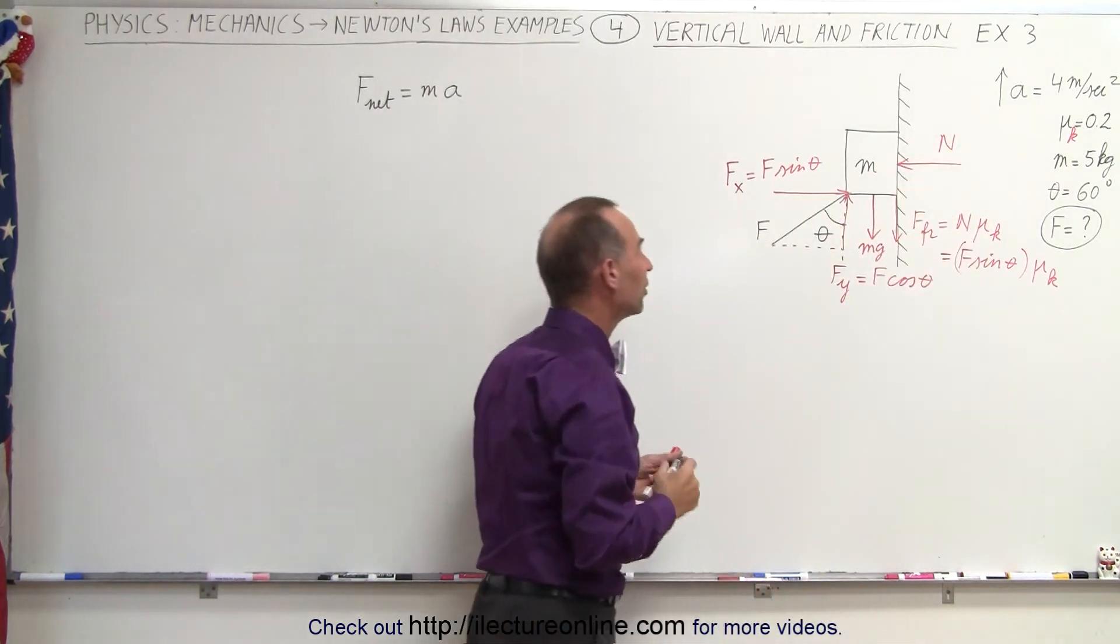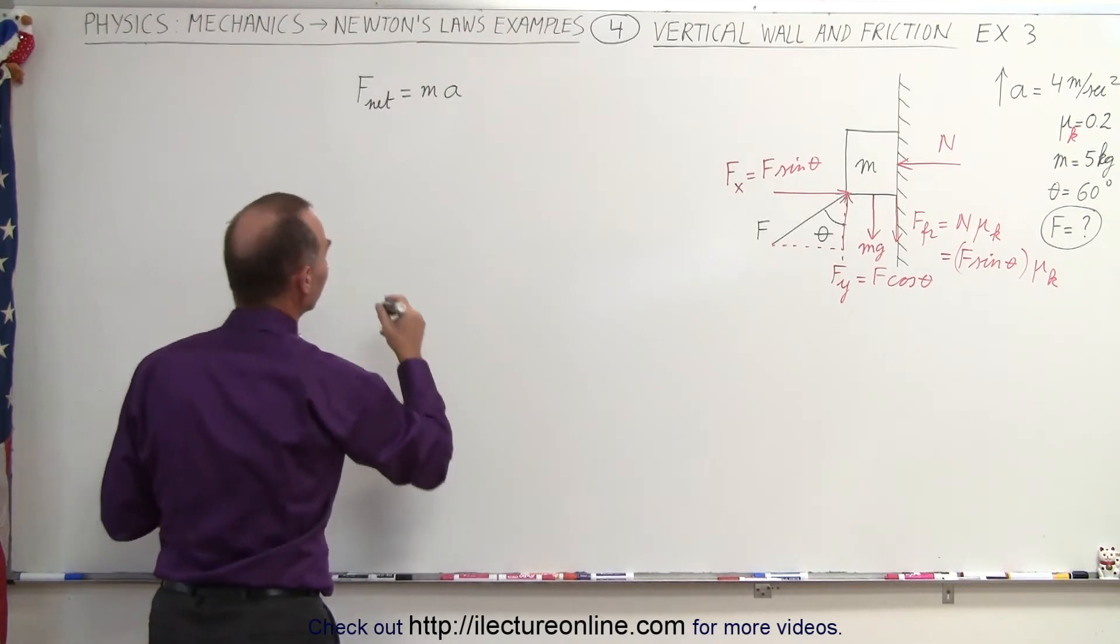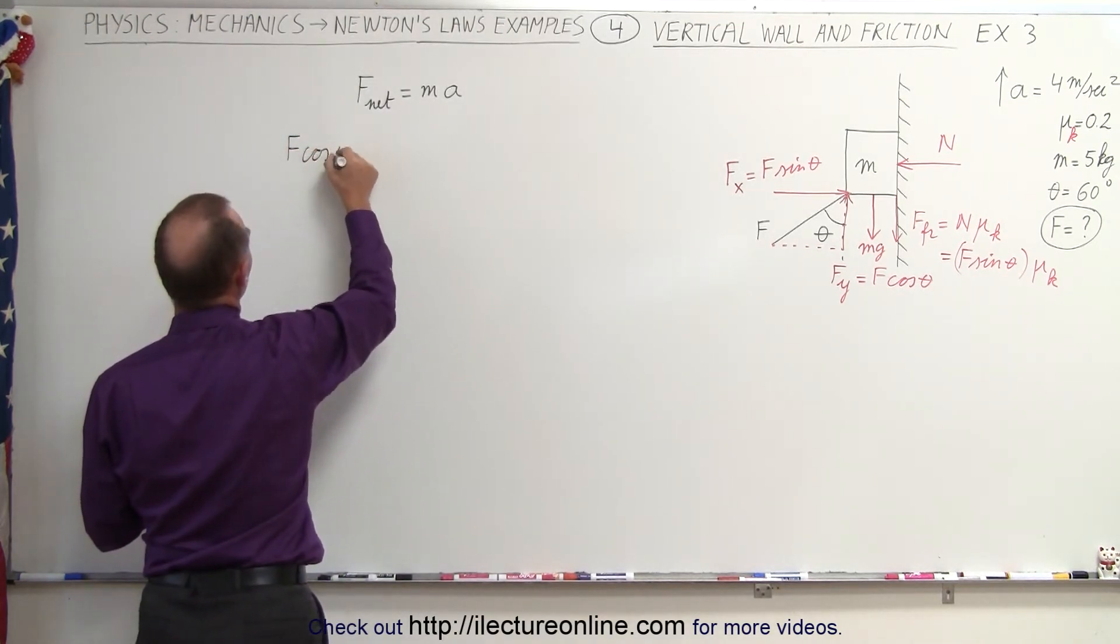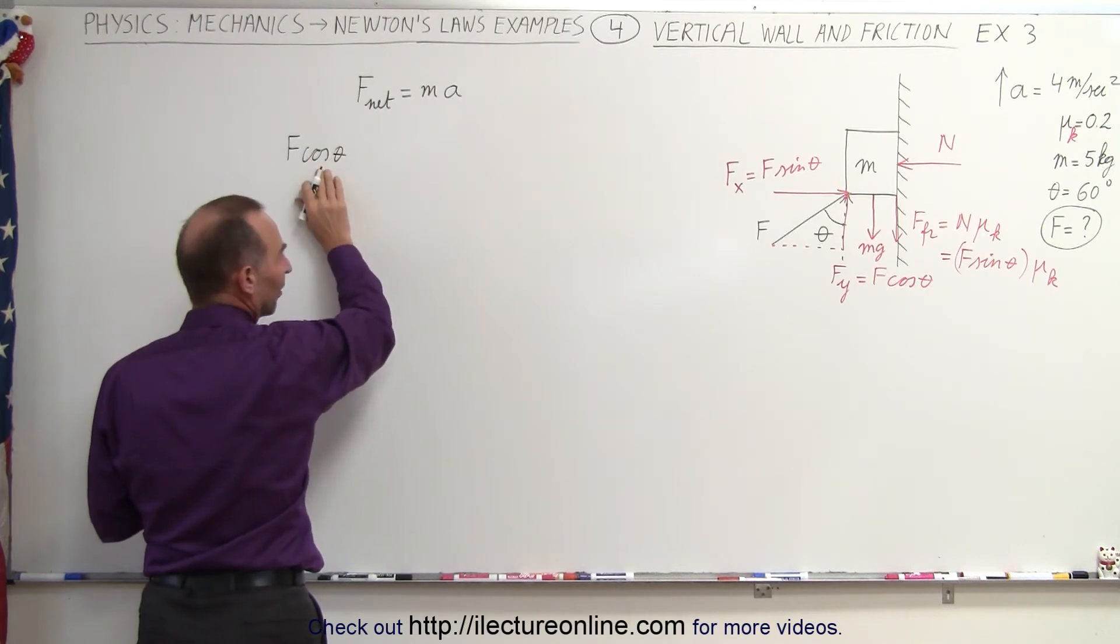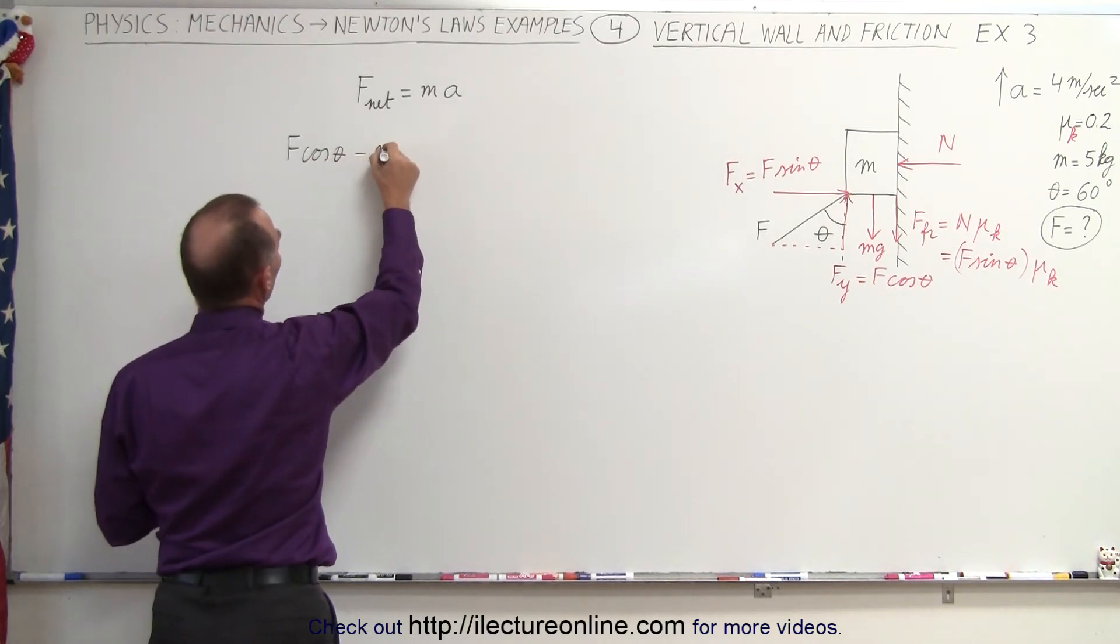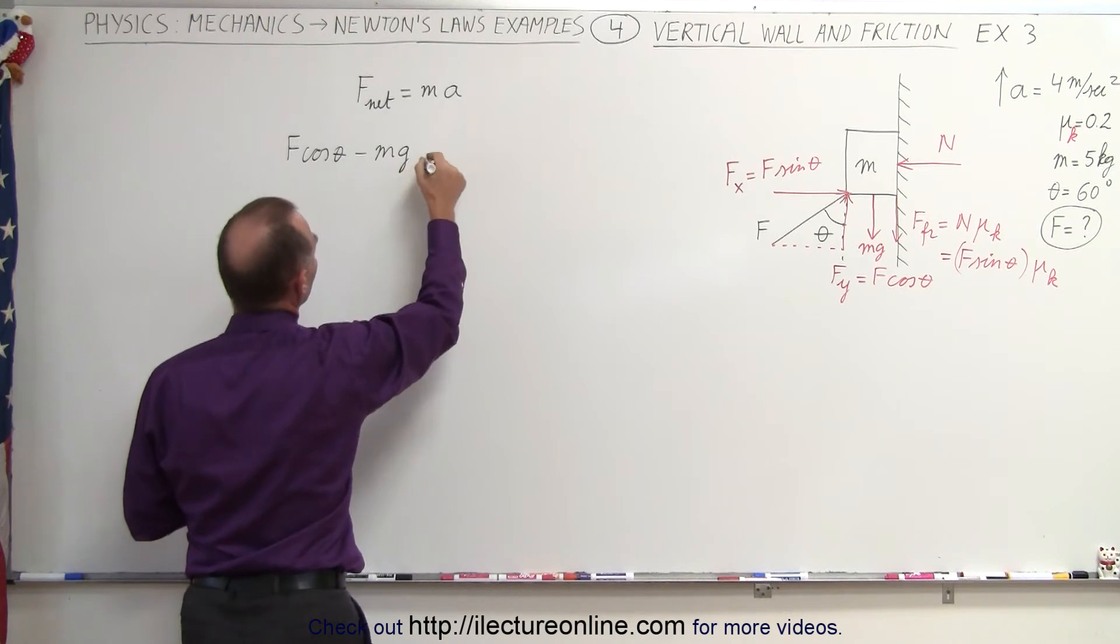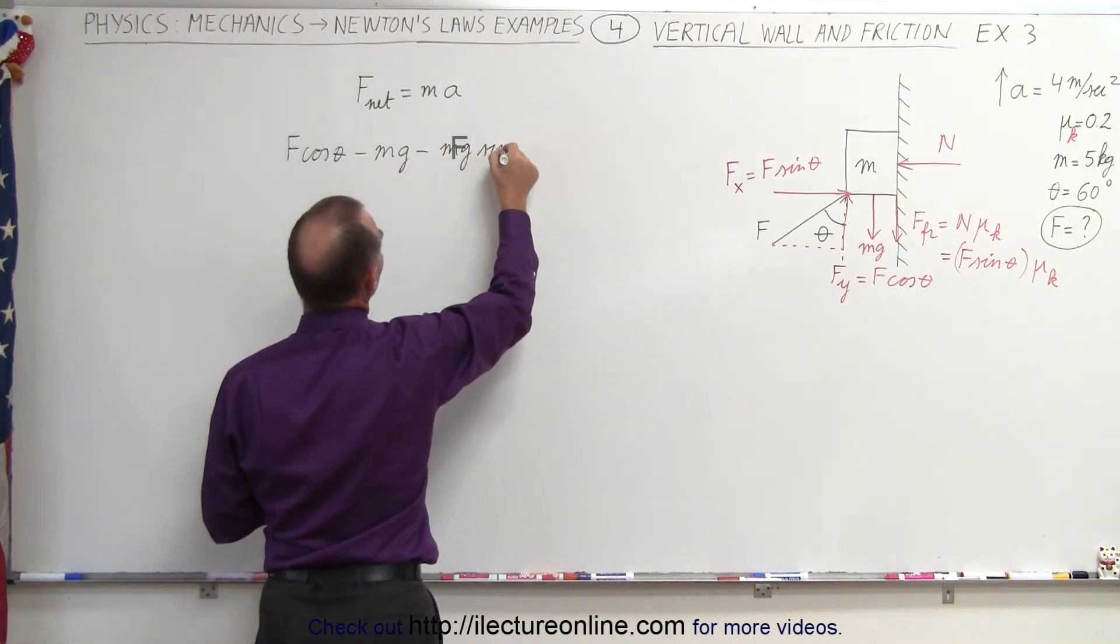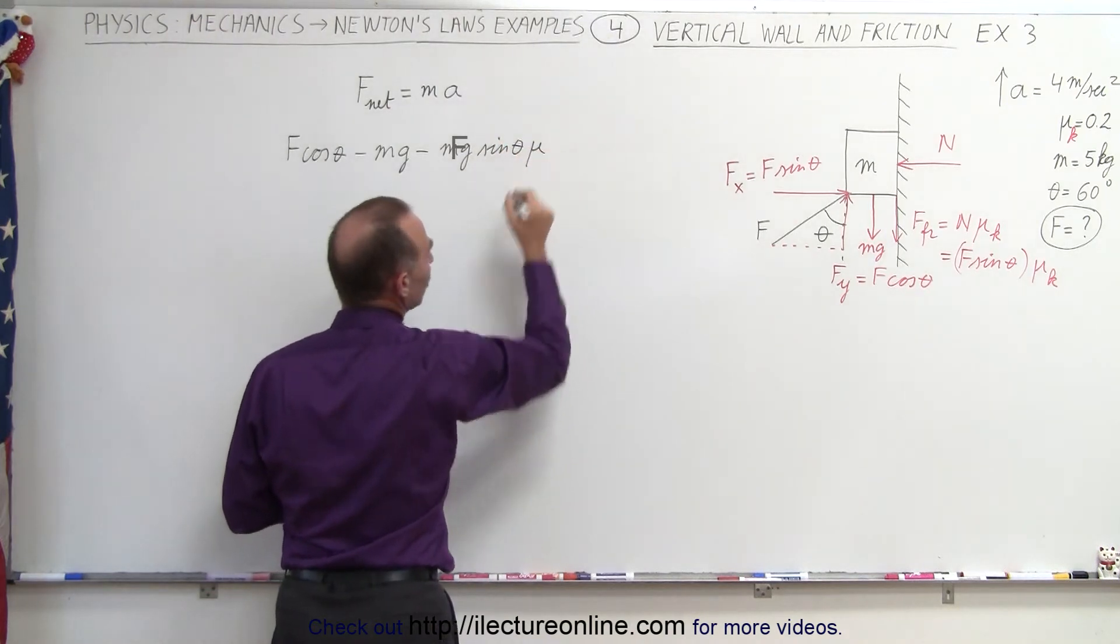So in this case we have F times the cosine of theta, that's a force that aids acceleration, minus the weight, which opposes acceleration, and minus the friction force, which is mg times the sine of theta times mu.